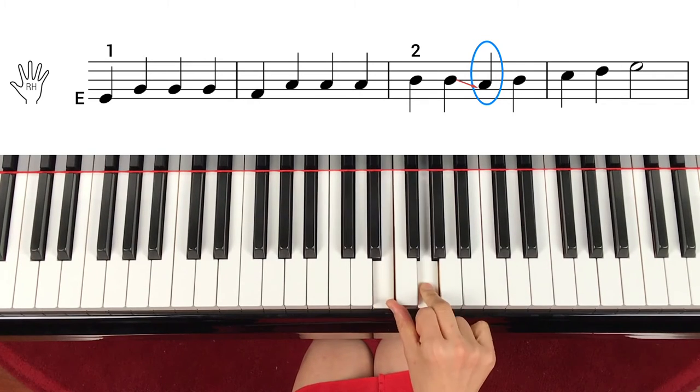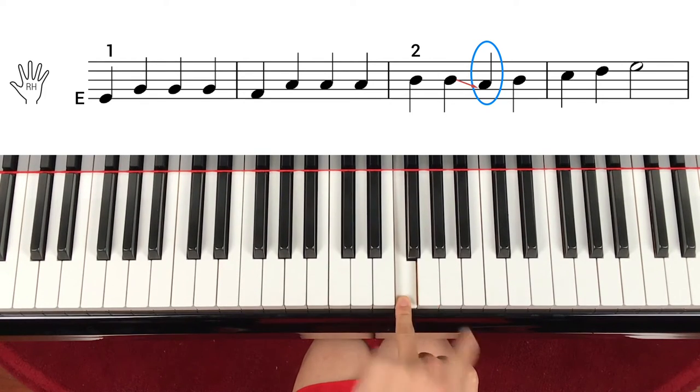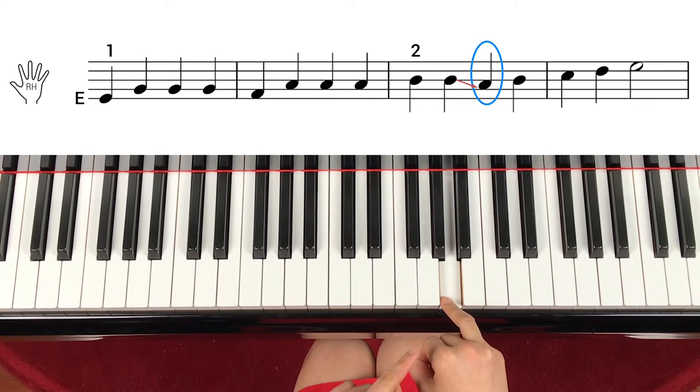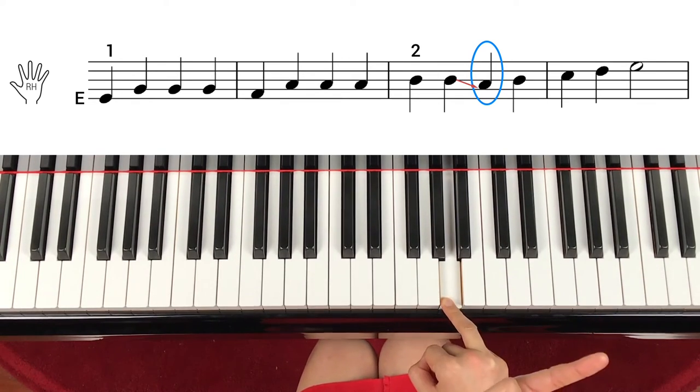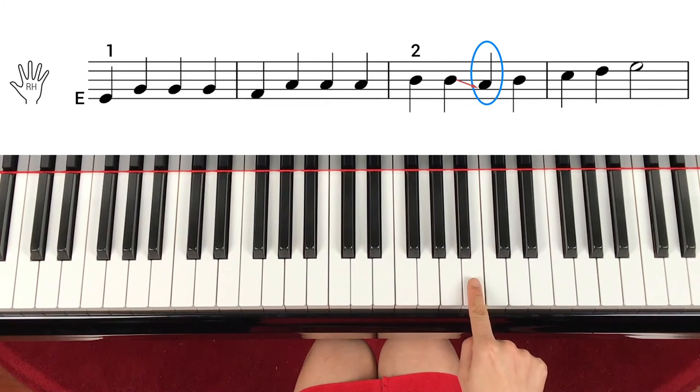And next note is skip up from E. So that's going to be here. Repeat, repeat, and step down. And skip up, space to space, right? So skip up, repeat, repeat. Next note is also from space to line, step up, that one. But this time we have to switch finger number two. So come to finger number two.